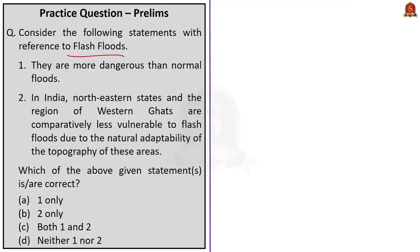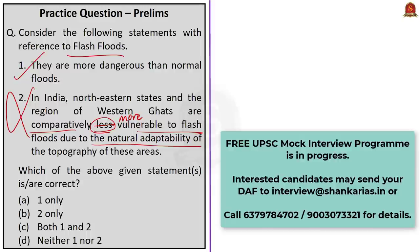The next question is based on flash floods. Statement 1: they are more dangerous than normal floods — this is correct. Statement 2: in India, Northeastern states and the Western region of Western Ghats are comparatively less vulnerable to flash floods due to natural adaptability of topography — this is incorrect, as these regions are actually more prone to flash floods caused by cloud bursts. Therefore, the correct answer is Option A: Statement 1 only.